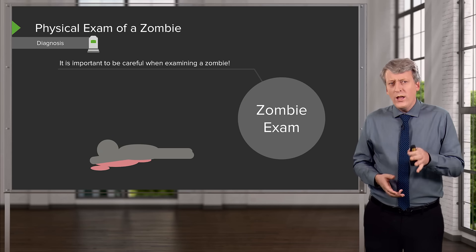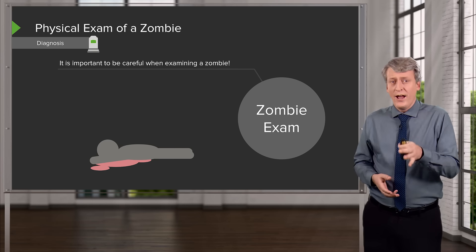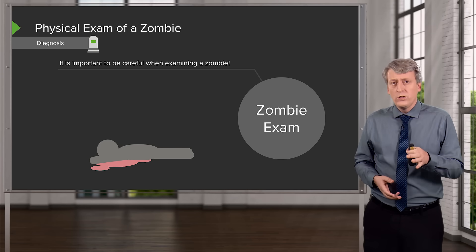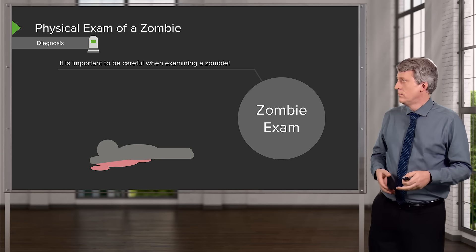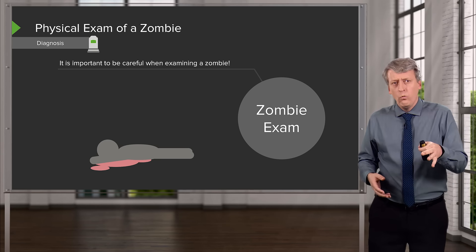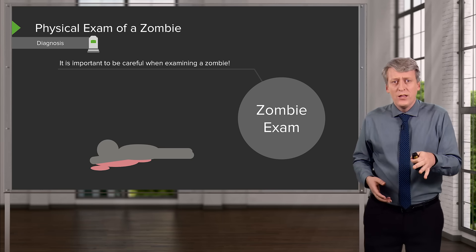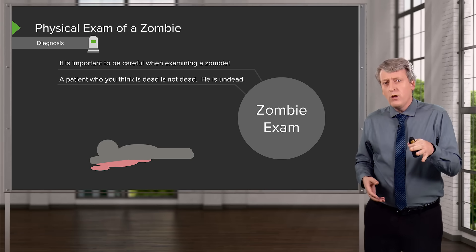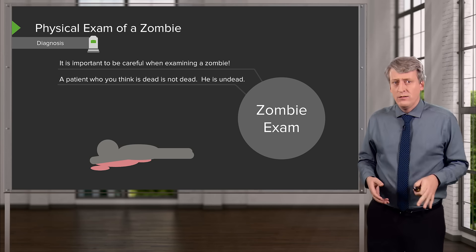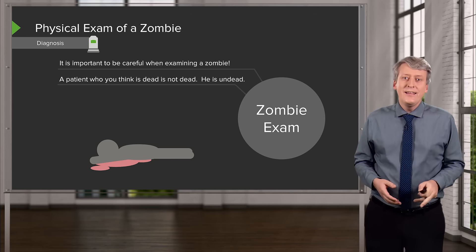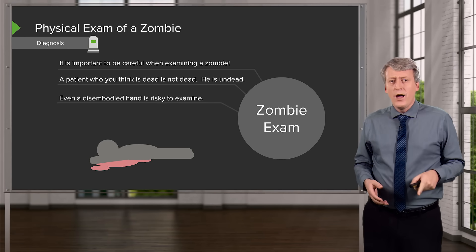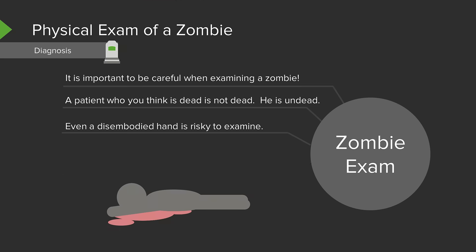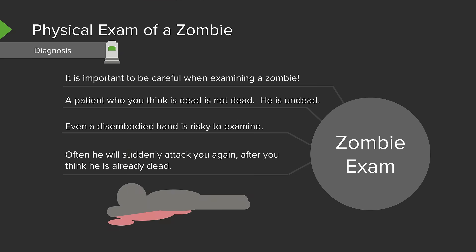So, when you examine a zombie to see if they are, in fact, a zombie, it is important to be extremely careful. When you examine the zombie, you generally might think the patient is dead. But he is not dead — he is, in fact, undead. So, even a disembodied hand is risky to examine. Often, he will suddenly attack you again after you think he is already dead.